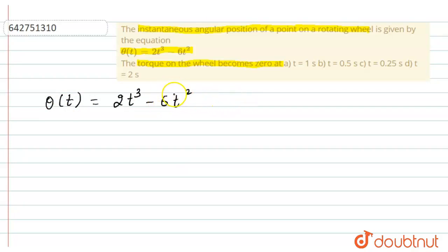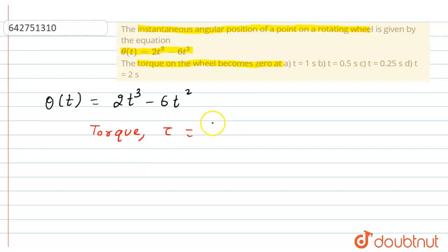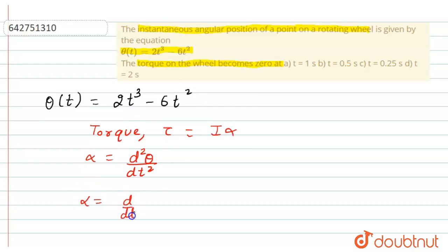To find the torque, we first need to find the angular acceleration. The formula for torque is τ = Iα, where α is the angular acceleration, calculated by d²θ/dt². So alpha equals d/dt of (dθ/dt).